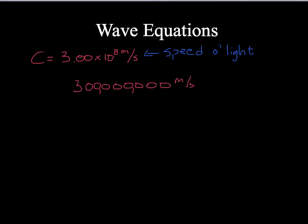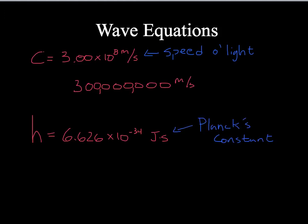The next constant is called Planck's constant, symbolized with a lowercase h. The value of Planck's constant is 6.626 times 10 to the negative 34 joule seconds — joules times seconds. Joules is a measurement of energy, so this is a value we'd use to find the energy of a particular wavelength. Just remember this number — it's a constant, always the same, so when you see it in an equation, you plug that number in and solve.